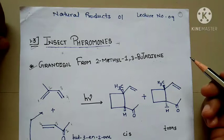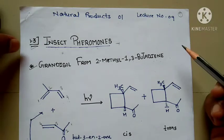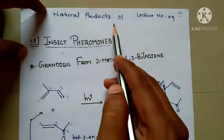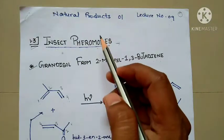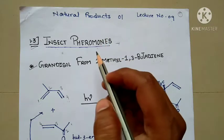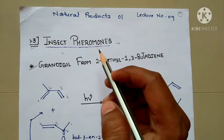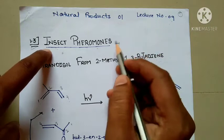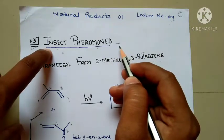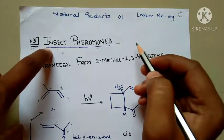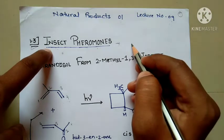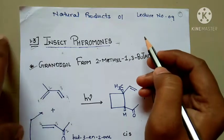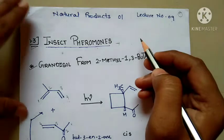Hello, good morning. My name is Rakesh Shirke and you are watching my channel. Let us start with lecture number nine from Natural Products. We have to see section 1.3, that is insect pheromones. Pheromones are chemical agents secreted by insects as sexual attractors. These chemicals are used to attract insects and predict population.